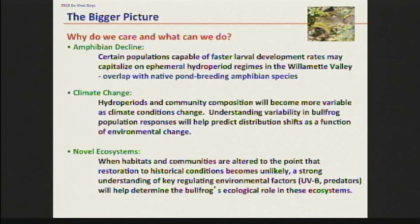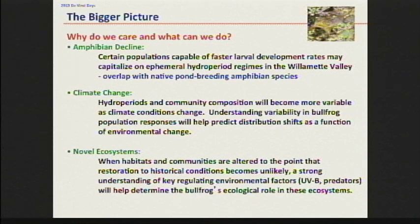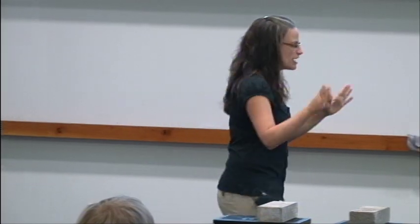Amphibian decline — we're losing species, and we have potential to lose species here in the Pacific Northwest. It's important to watch bullfrogs for that reason. Climates are shifting, hydroperiods are going to be shifting as well, so we need to know how bullfrogs are going to respond. As these ecosystems become increasingly novel with human intervention, it's going to be important to track these species as their impact on native biodiversity changes over time. I invite everybody to come down, see a bullfrog, ask me questions.